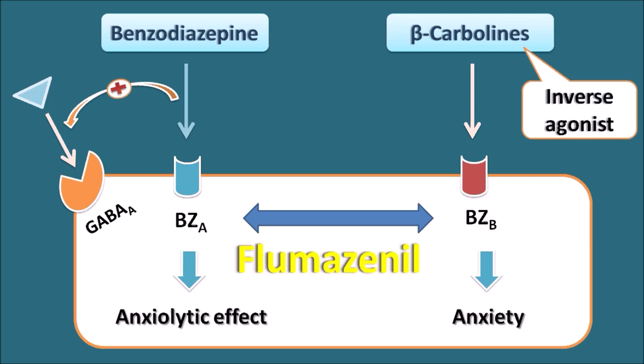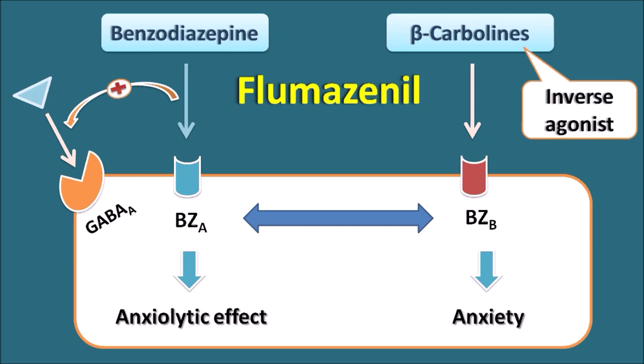Now Flumazenil, which is an antidote for benzodiazepines, can block the benzodiazepine-A conformation, thereby inhibiting benzodiazepine-related actions. At the same time Flumazenil can also block the benzodiazepine-B conformation, so that's why Flumazenil is a real antagonist for the benzodiazepine receptors. It can block both benzodiazepine-A conformation as well as benzodiazepine-B conformation.